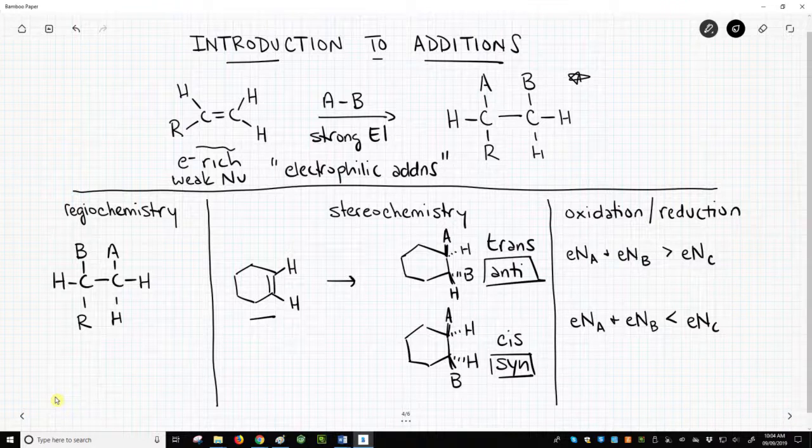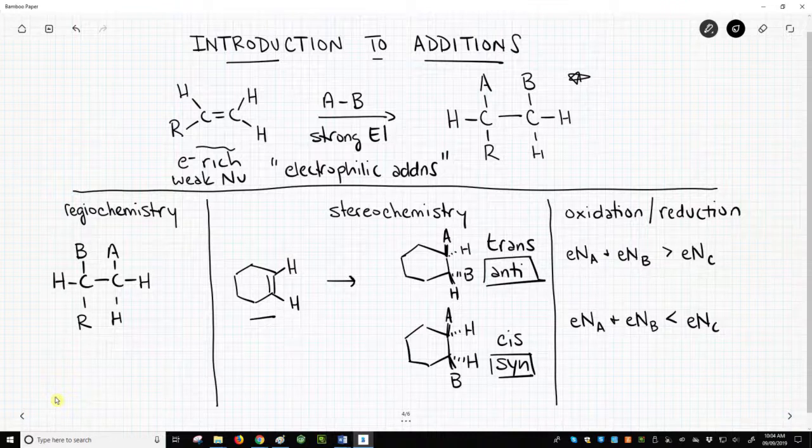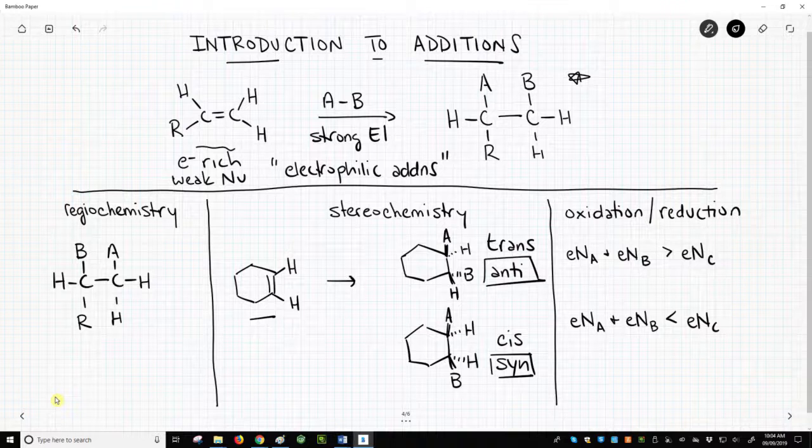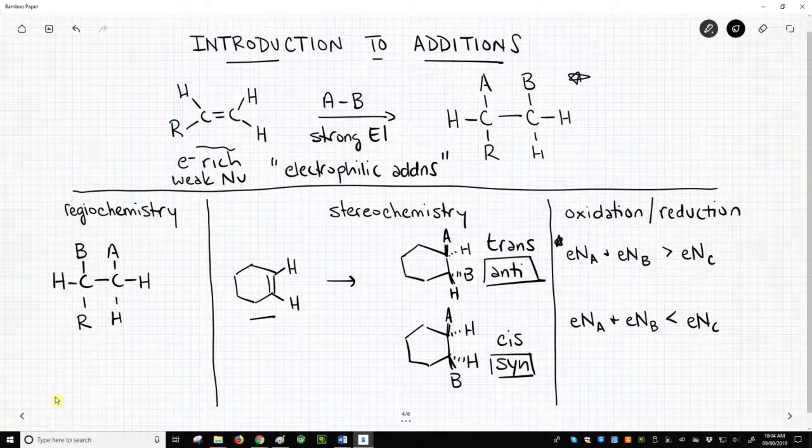We need to understand whether additions give the syn or anti-product or a mixture of the two. Finally, addition reactions are often classified as oxidations or reductions or neither. If both the AB atoms are more electronegative than carbon, then the addition is an oxidation.